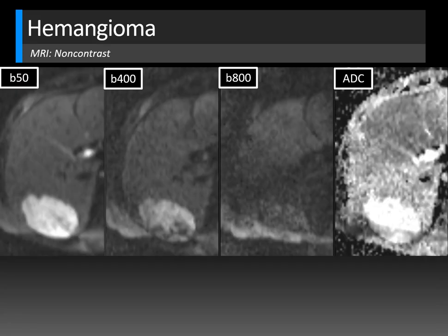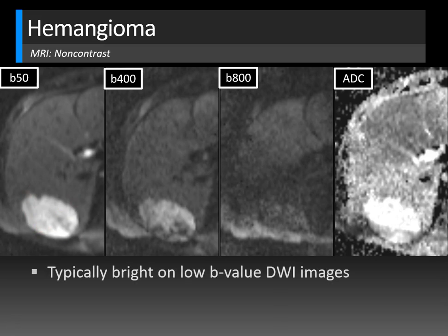On diffusion weighted imaging, a typical abdominal MRI diffusion sequence includes B50, B400, and B800 series. As the B value increases, the strength of diffusion increases but the signal-to-noise ratio decreases, making higher B-value images fuzzier. Also, as B value increases, the strength of T2 weighting decreases. So lesions that are T2 bright — like hemangiomas — will be bright on B50 but become dark on B800. CSF and other fluid-containing structures that do not restrict diffusion will also become dark on B800.